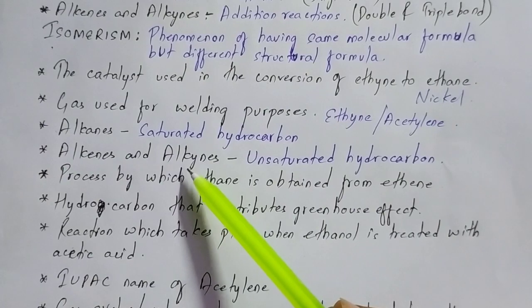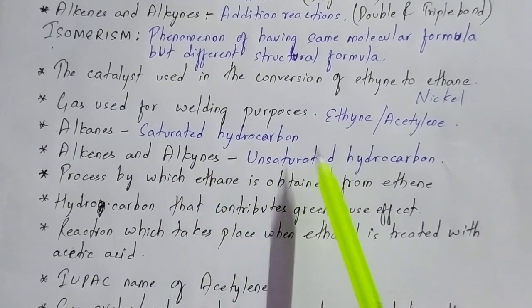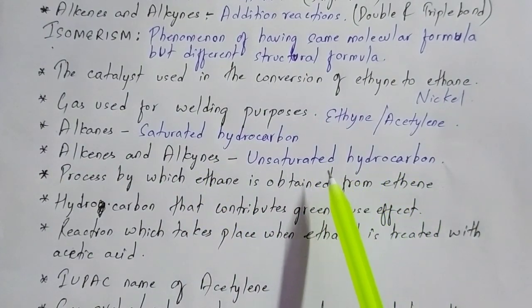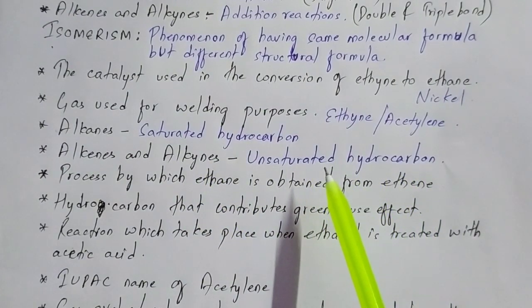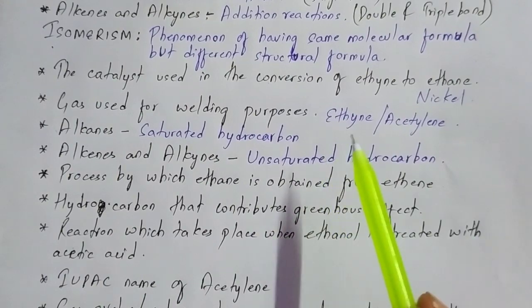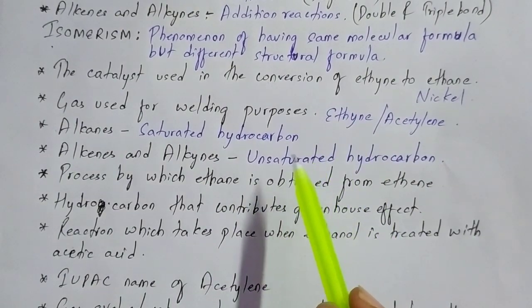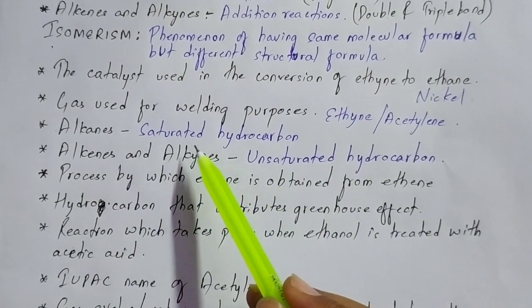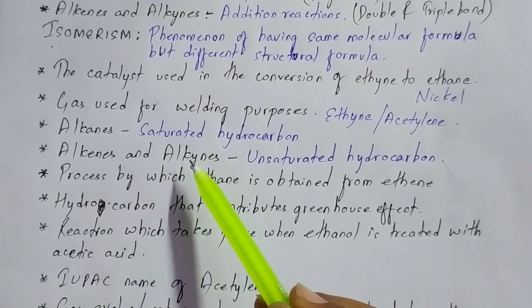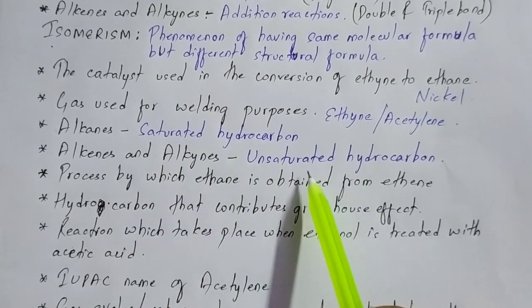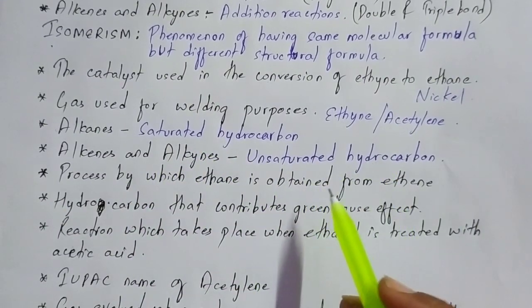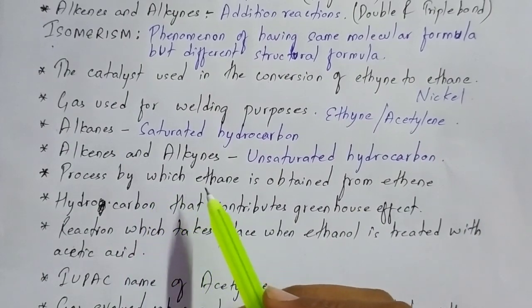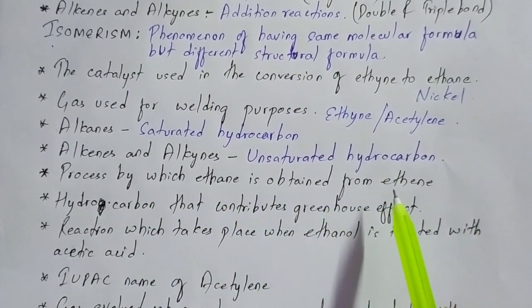You have to keep in mind that alkanes are saturated hydrocarbons, whereas alkenes and alkynes are unsaturated hydrocarbons. This can be asked in fill-in-the-blanks or choose-the-correct-option type questions, so you must remember it.